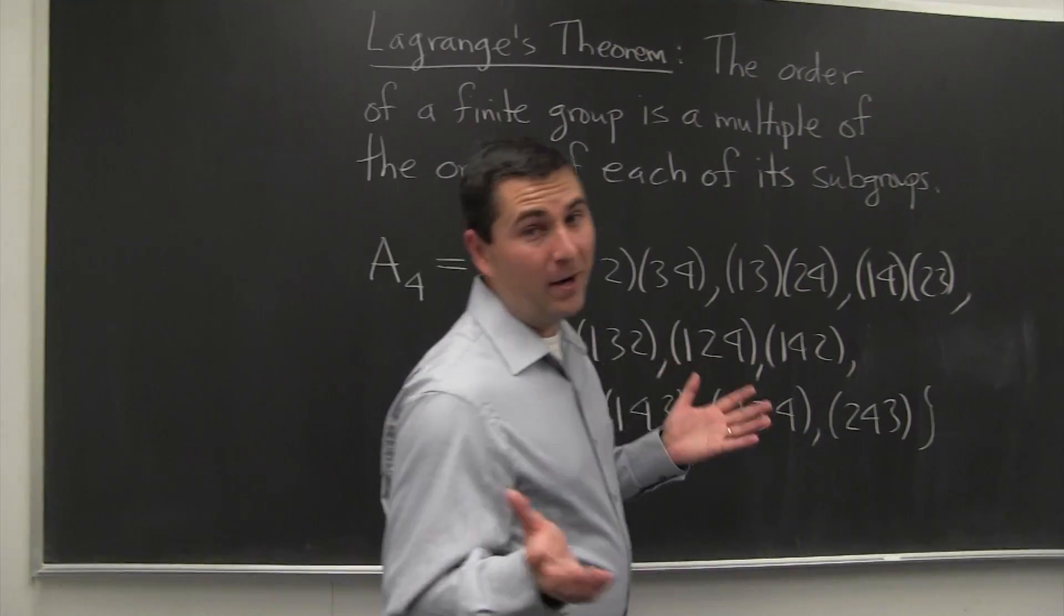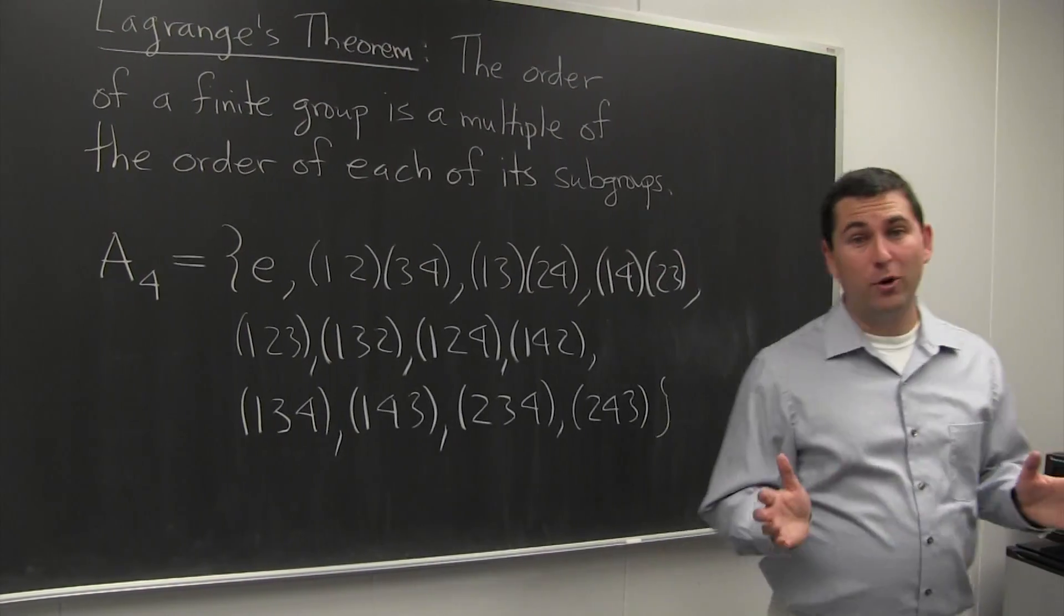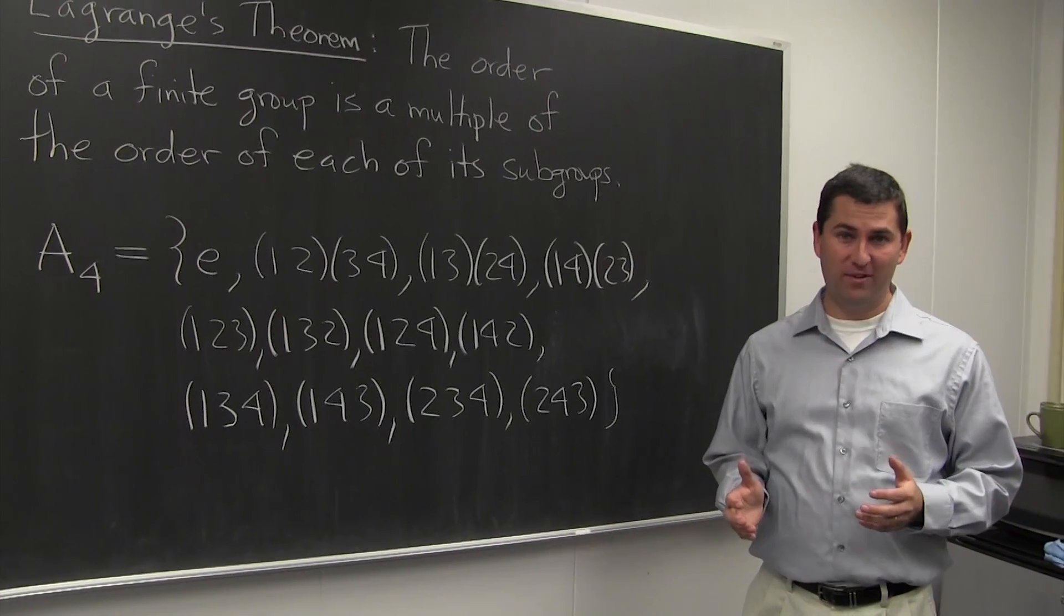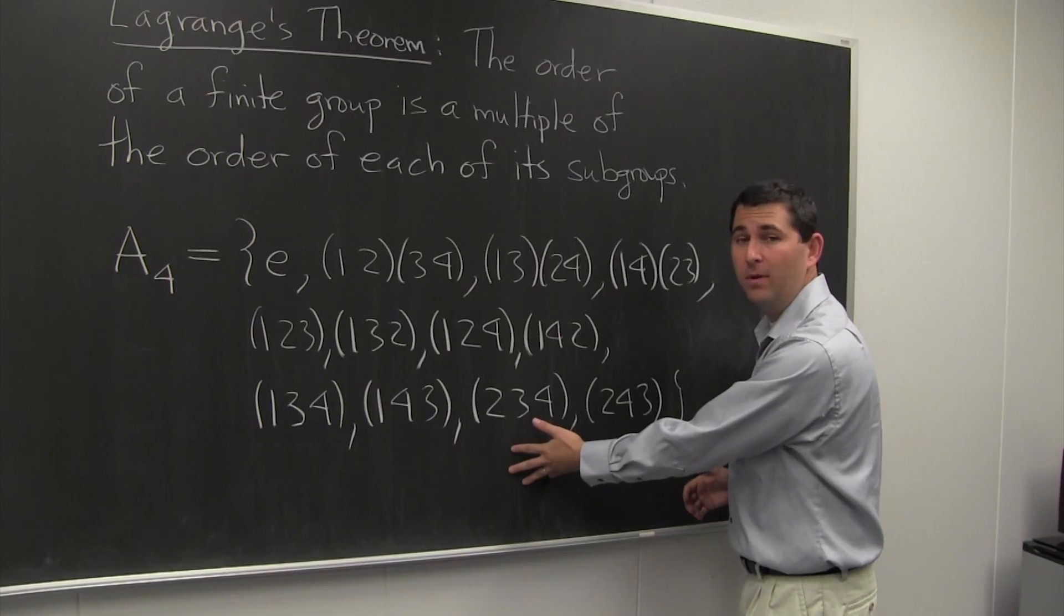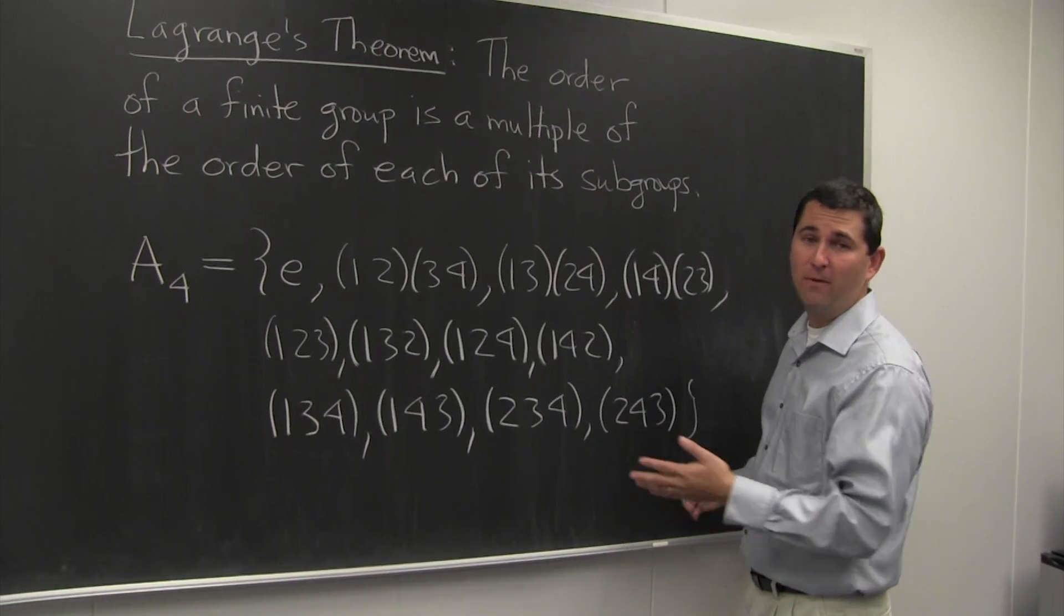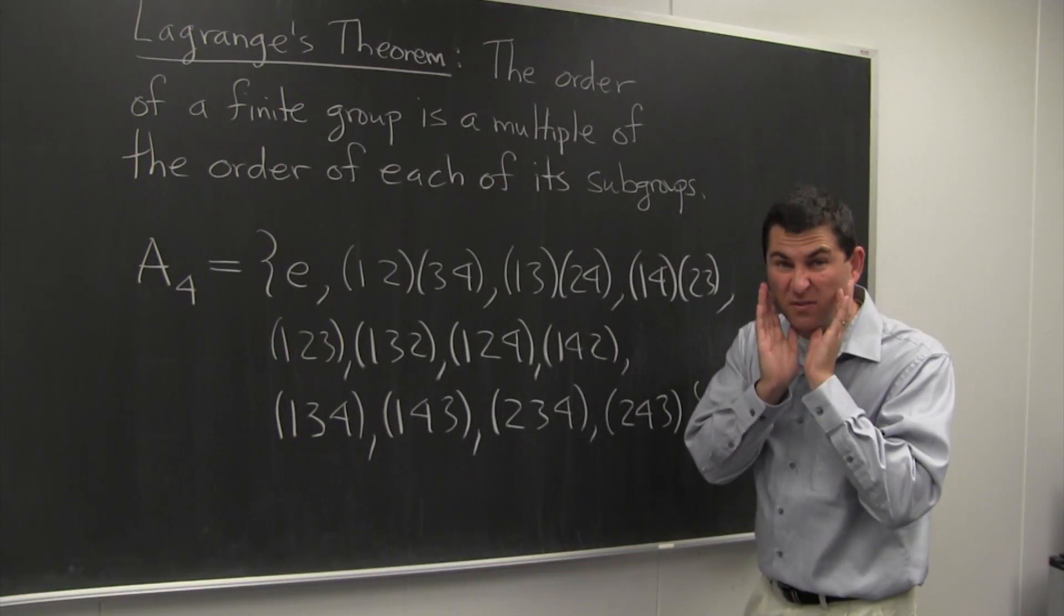Okay, it was a trick question. Not every group of order 12 has a subgroup of order 6. For instance, this group here is a subgroup of the group of permutations on 4 objects. We call it S4.